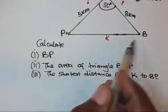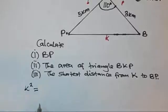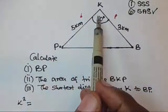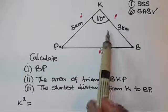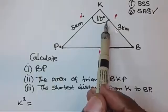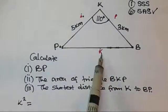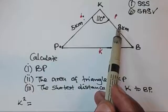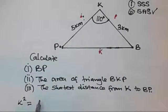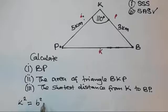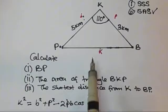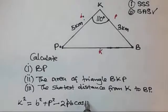We are going to find this using the cosine rule. We write: k² = b² + p² − 2bp·cos(K). We are looking for the side opposite the given angle, so we use the two given sides plus the given angle. The given angle here is 110 degrees, so: k² = b² + p² − 2·b·p·cos(110°).